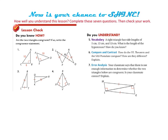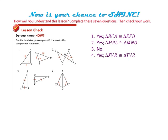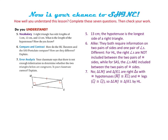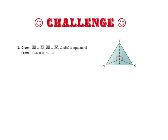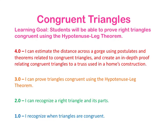Now is your chance to see how well you understand the lesson. Pause the video and do the lesson check. Don't forget to check your answers on the next slides. Go ahead and check the answers for questions one through four, then check your answers for numbers five through seven. If you missed any and you're not sure why, please be sure to ask me in class. If you rock the lesson check, go ahead and try the challenge — I'm sure you can do this one too. Now take another minute to reread the learning goal and scale. Have you climbed any higher on the scale since we covered the lesson?